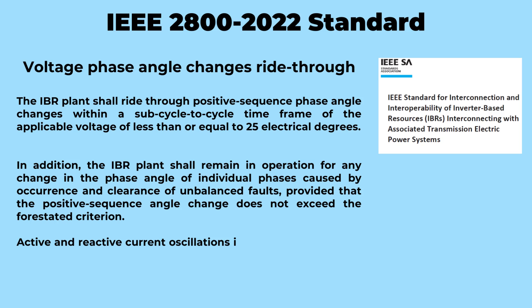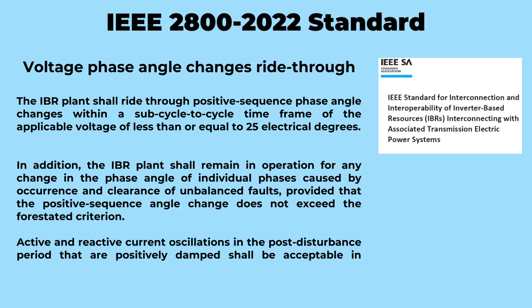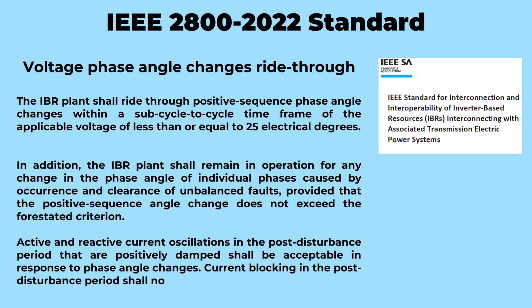In addition, when unbalanced faults occur causing phase angle changes in individual phases, the IBR plant remains steadfast. As long as the positive sequence angle change remains within the specified criterion, the IBR plant continues to power through, ensuring a reliable and stable electrical grid. As phase angles fluctuate post-event, the IBR plant may observe active and reactive current oscillations that dynamically respond to the phase angle changes. These oscillations, being positively damped, signify the IBR plant's ability to navigate through shifting electrical waves. Inverters should not have any scope of current blocking in the post-disturbance period.